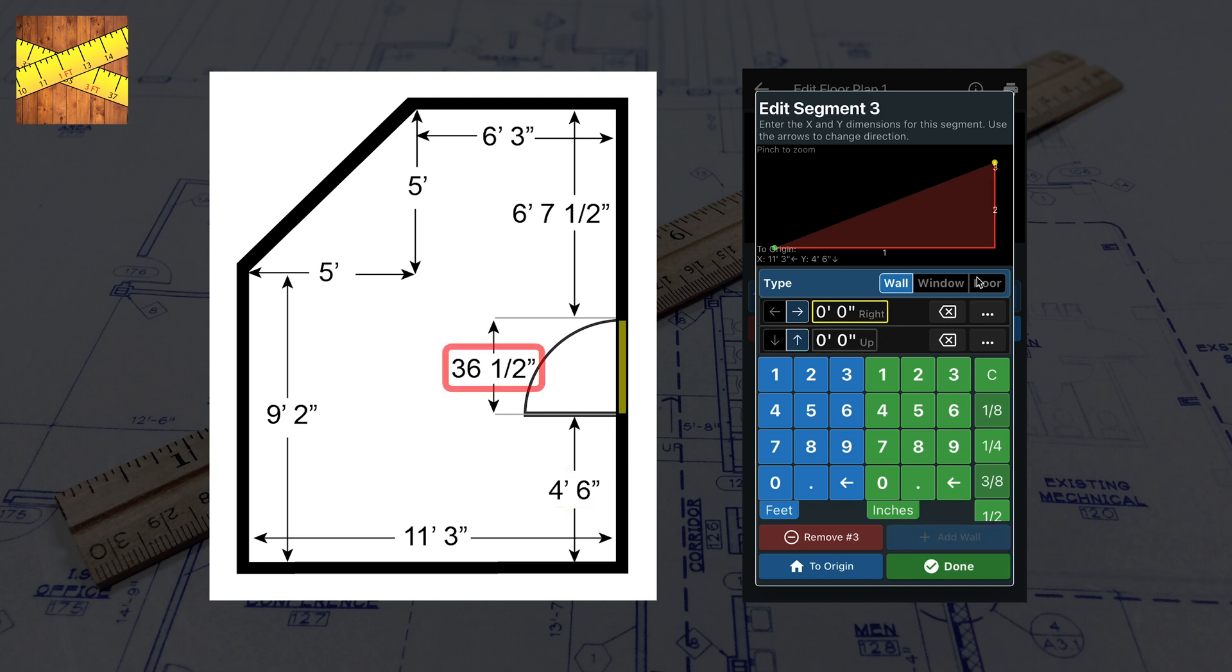Add another wall and change the type to Door. Set the dimension in the up direction to 36 and a half inches.